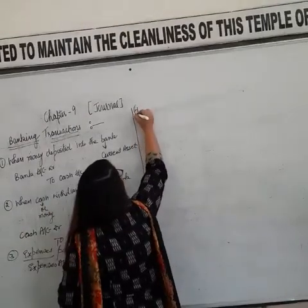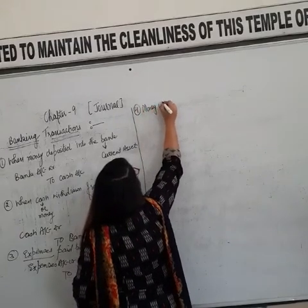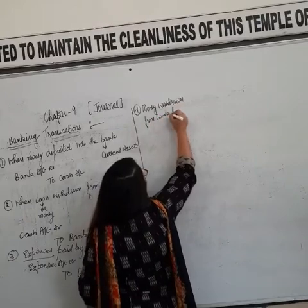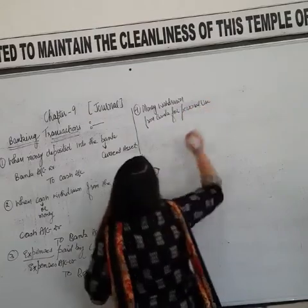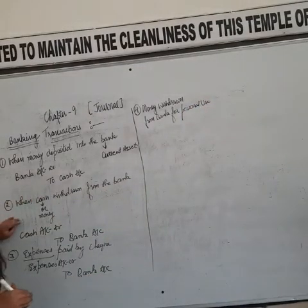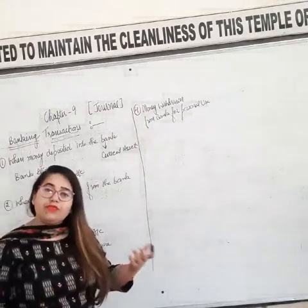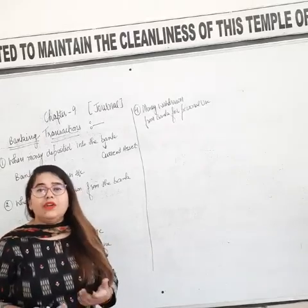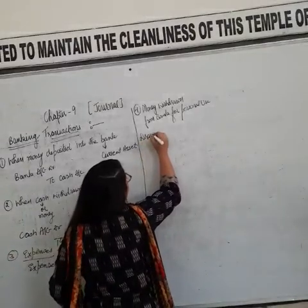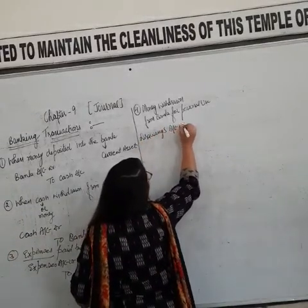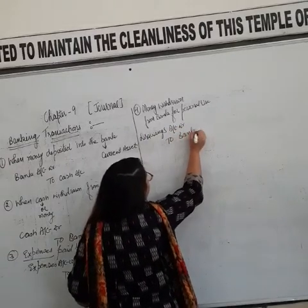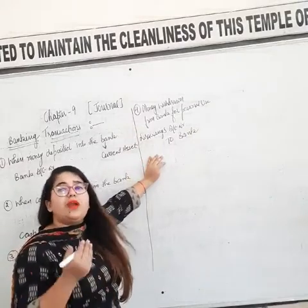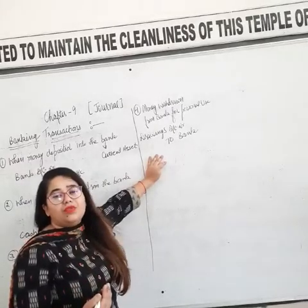Transaction number 4 is money withdrawn from the bank. If you are withdrawing money from the bank for office use — that is business use — then we debit cash. But if we are withdrawing money from the bank for personal use, then we do not debit cash; instead, we debit drawings. The journal entry is: drawings debit to bank.